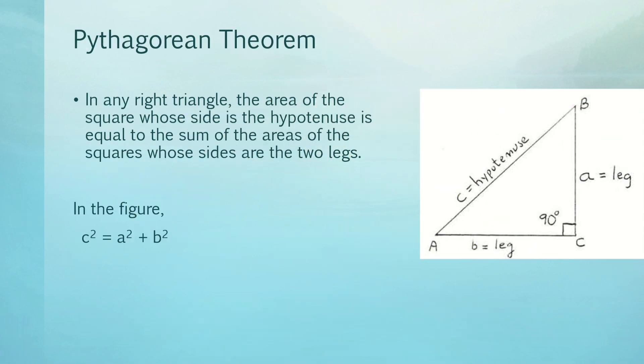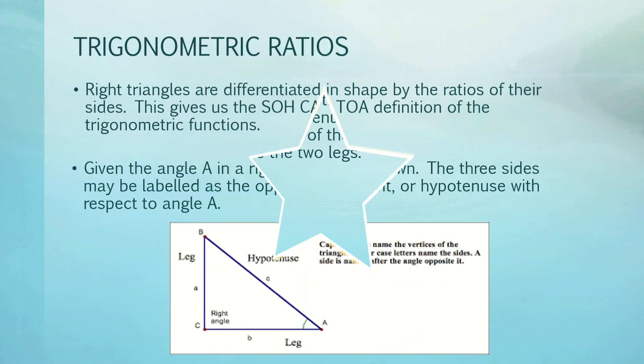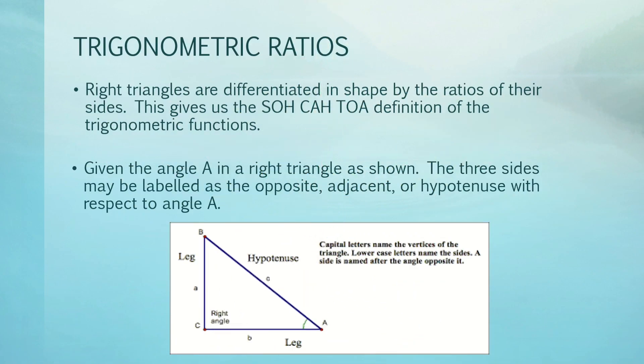In our previous lesson we also discussed the Pythagorean theorem. In any right triangle, the area of the square whose side is the hypotenuse is equal to the sum of the areas of the squares whose sides are the two legs. In the figure, c squared is equal to a squared plus b squared. It simply states that when you add the squares of the two legs, that equals the square of the hypotenuse.